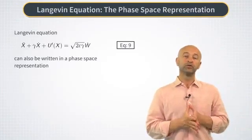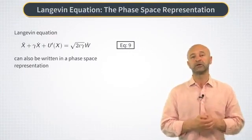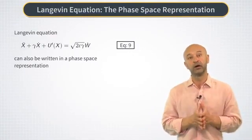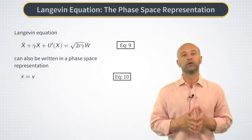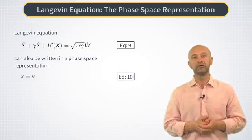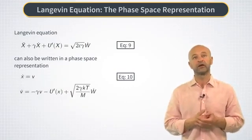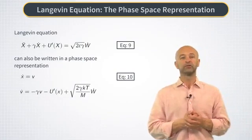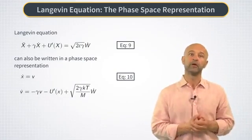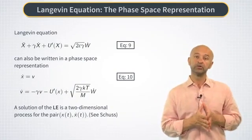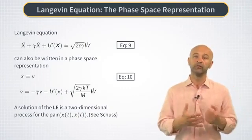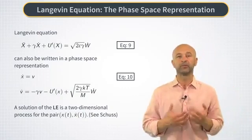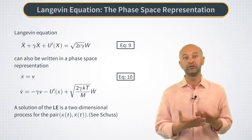Now, the Langevin equation can also be written in an equivalent phase space form. To this end, we write it as two equations. The first equation says that V is a time derivative of X, and the second equation gives the time evolution of V. And this means that the solution of the Langevin equation is actually a pair of two variables, the particle position xt and its velocity vt.